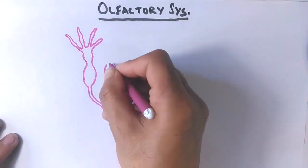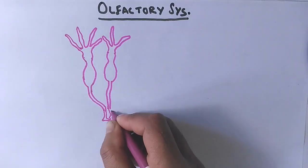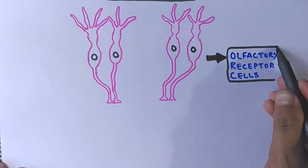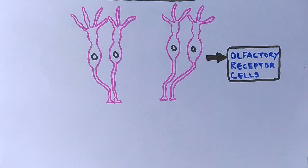If we see the structure, it has got olfactory receptor cells which are present in the olfactory epithelium of the nasal cavity. It's these olfactory receptor cells with which we are able to transduce the chemical stimulus and make it into action potential.